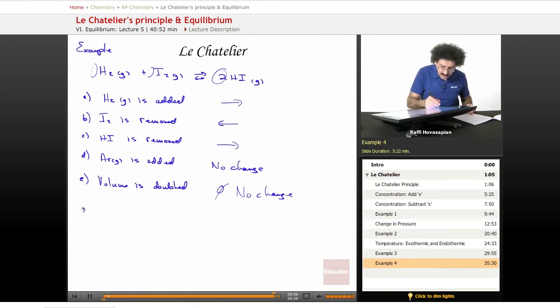Now let's do F. Let's do a temperature increase. The temperature is increased. Oh, I forgot to write. What is the delta H here? The delta H is, formation is 25.9 kilojoules. So this is actually endothermic.